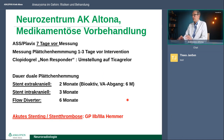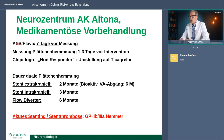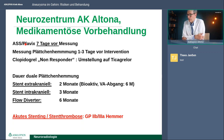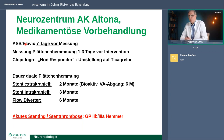Wenn man Stents oder Flow Diverter nimmt, muss man Medikamente nehmen: Aspirin 100 Milligramm und Clopidogrel – Plavix ist ein Markenname. Wir müssen immer sichergehen, dass die Thrombozytenfunktionshemmung ausreichend ist. Deswegen machen wir eine Messung vorher, und wenn es nicht ausreichend wirkt, würden wir auf neuere Medikamente umstellen – das ist entscheidend, um das Risiko eines Schlaganfalls zu minimieren. Wenn die Behandlung vorbei ist und wir nur Coils oder neue Implantate genommen haben, brauchen wir keine weitere Medikation. Wenn wir aber Stents oder Flow Diverter drin haben, muss man für zwei bis sechs Monate diese Medikamente nehmen.